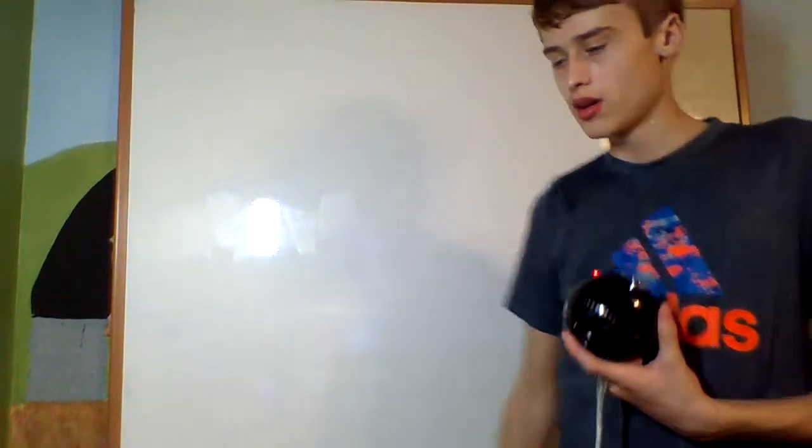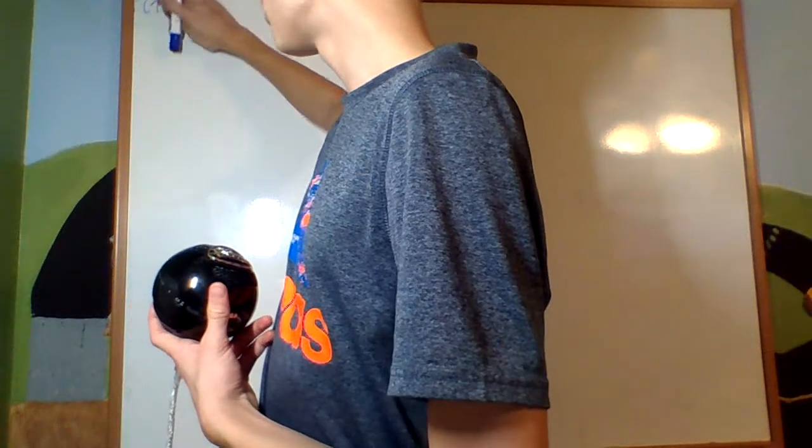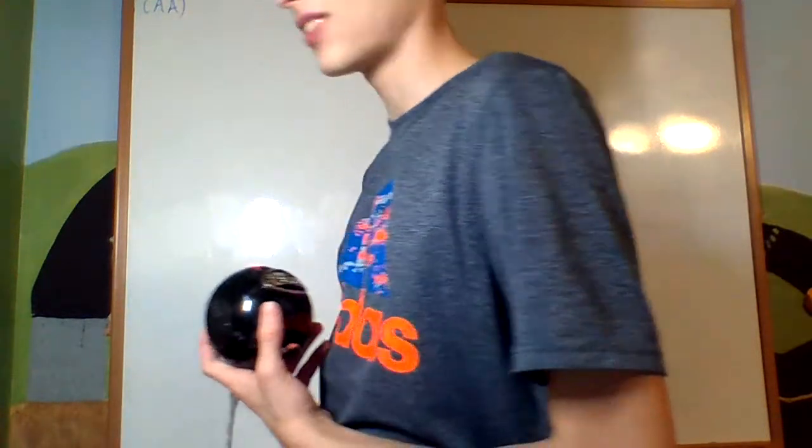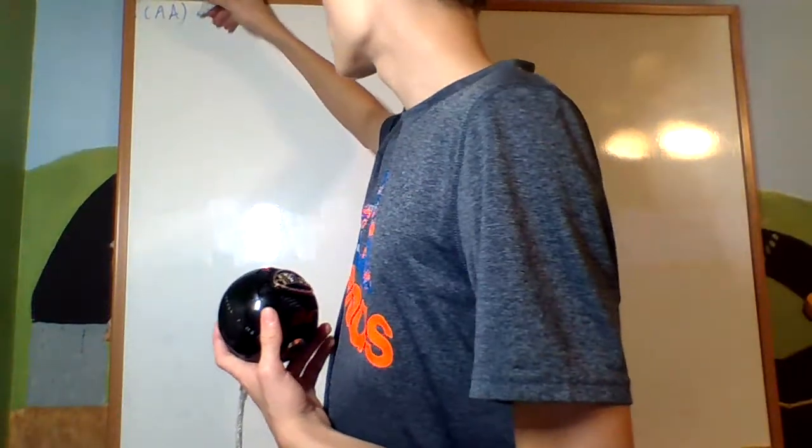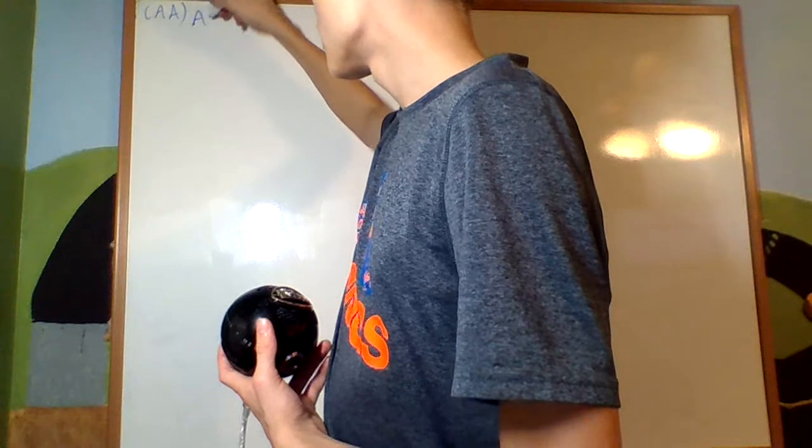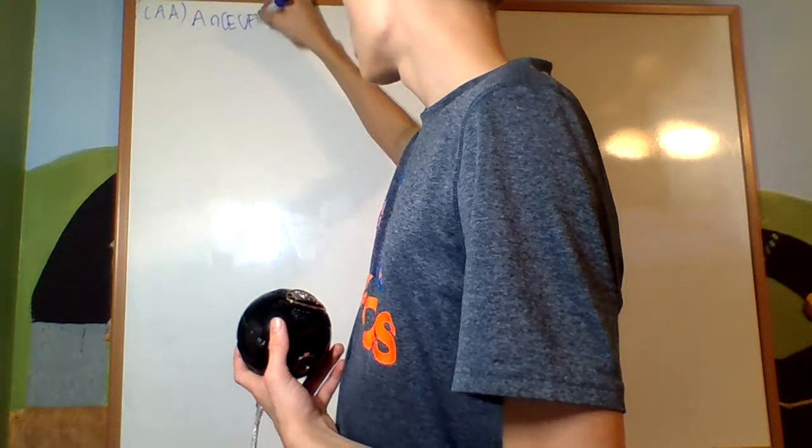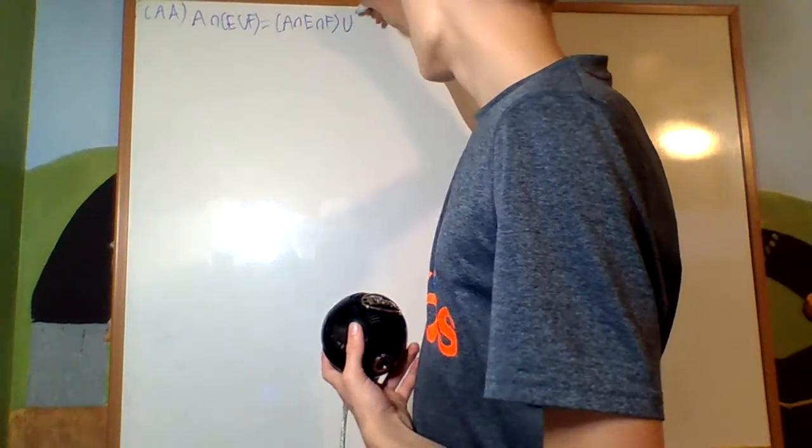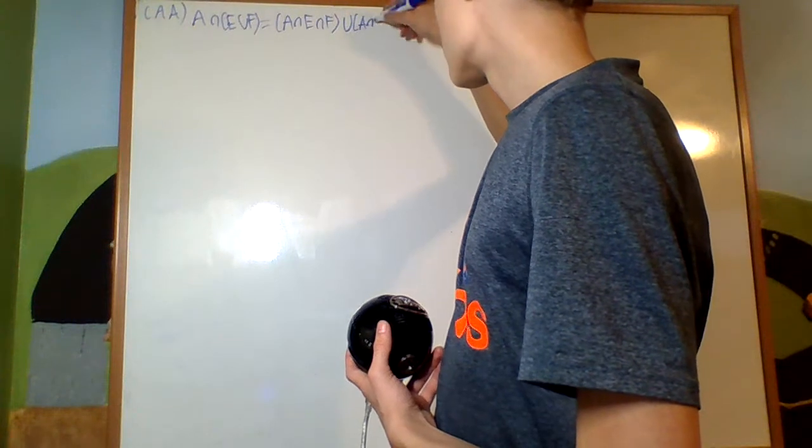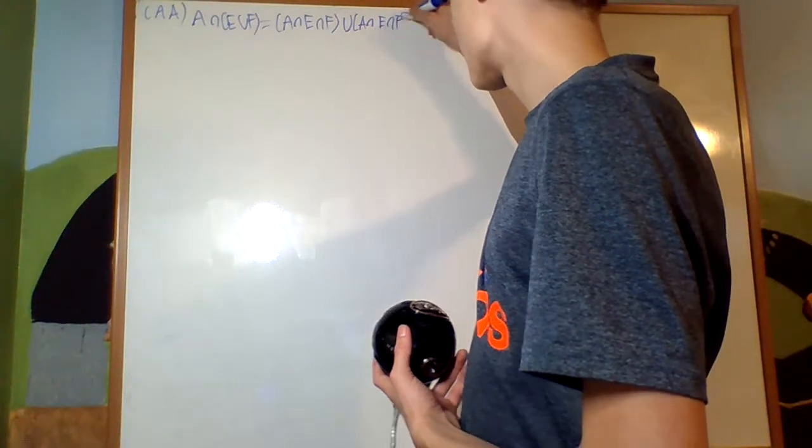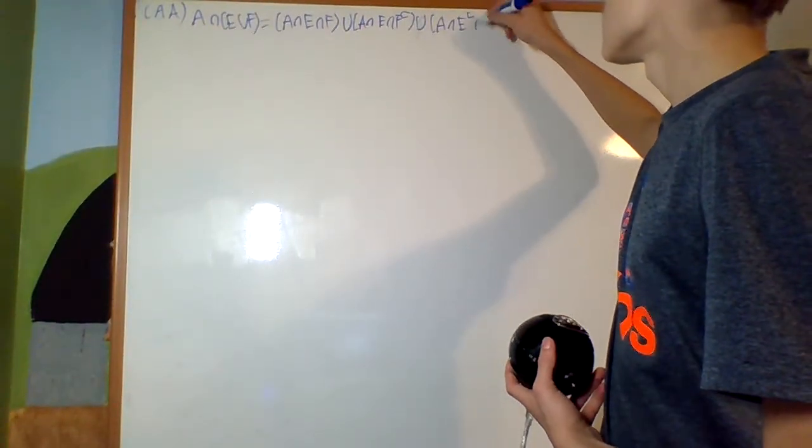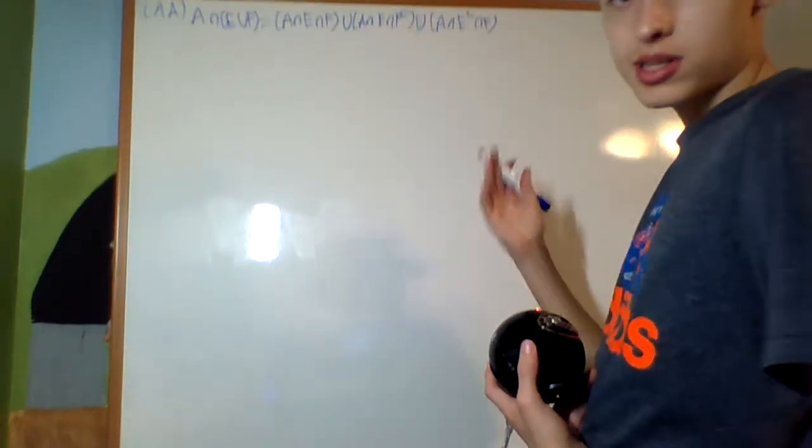First fact. Fact number AA. So fact number AA is that A intersect (E union F) you can split this up into A intersect E intersect F union A intersect E intersect F complement union A intersect E complement intersect F.